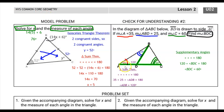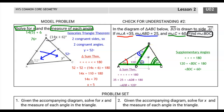AC is a line segment split by BD, so supplementary angles apply: 120 plus angle BDC equals 180, meaning angle BDC equals 60 degrees. Labeling this in the diagram, we see that angle BDC is 60 and angle C is 60 — they're congruent. Using the triangle sum theorem on triangle BCD: 60 plus 60 is 120, so angle DBC equals 60 degrees as well. This triangle is equilateral — all equal angles and therefore all equal sides. We found the measure of angle BDC.